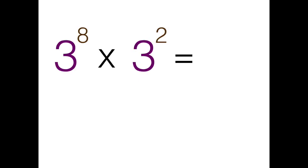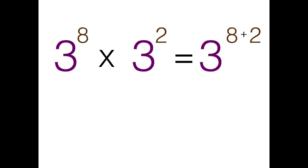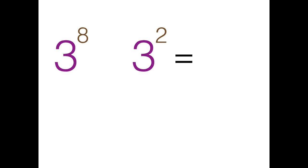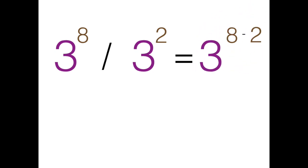If they're the same and I'm multiplying, I add the exponents like I'm supposed to do. Cause I got this boom boom, I keep the same base — all the right numbers, all the right places. And if you're dividing, subtract the exponents. The base is still the same.